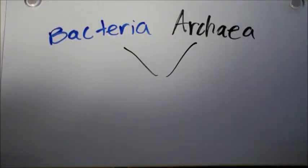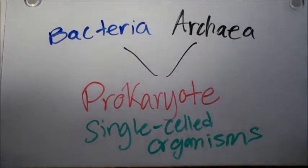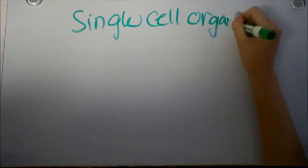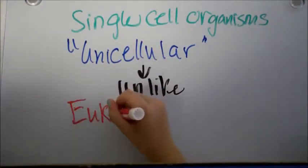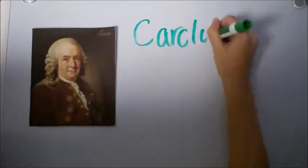Now both of these are prokaryotes, and prokaryotes are also known as single-celled organisms. Now single-celled organisms are also called unicellular, unlike eukaryotes, which are multicellular.